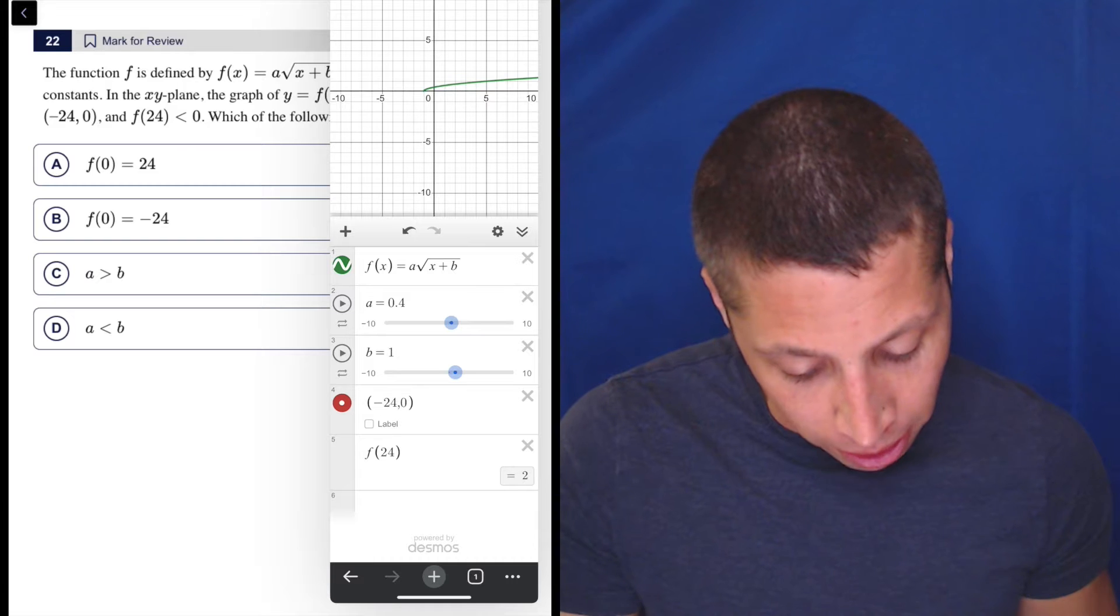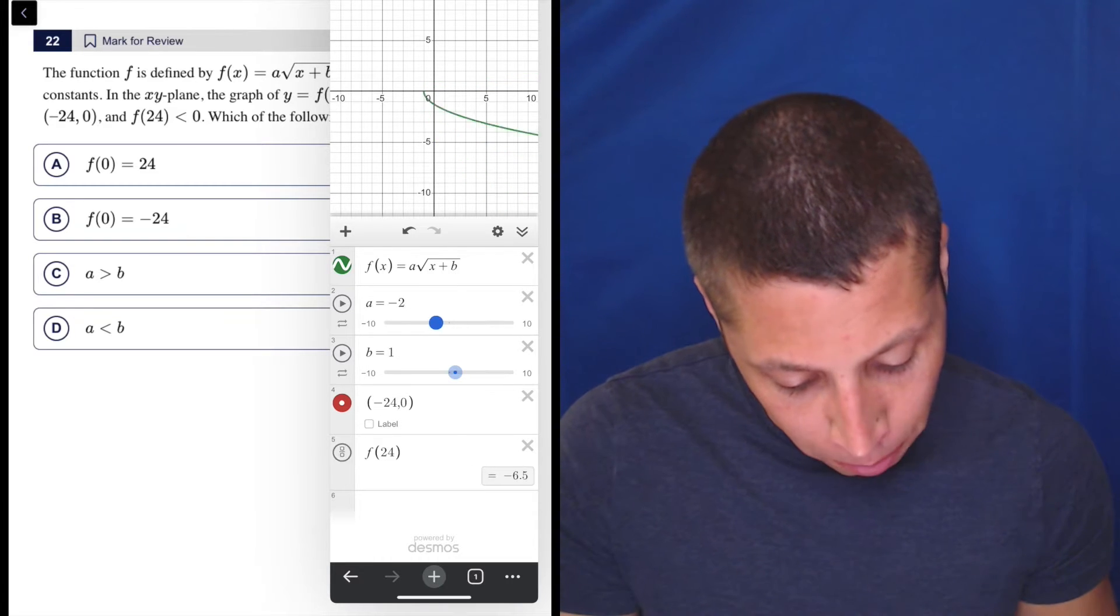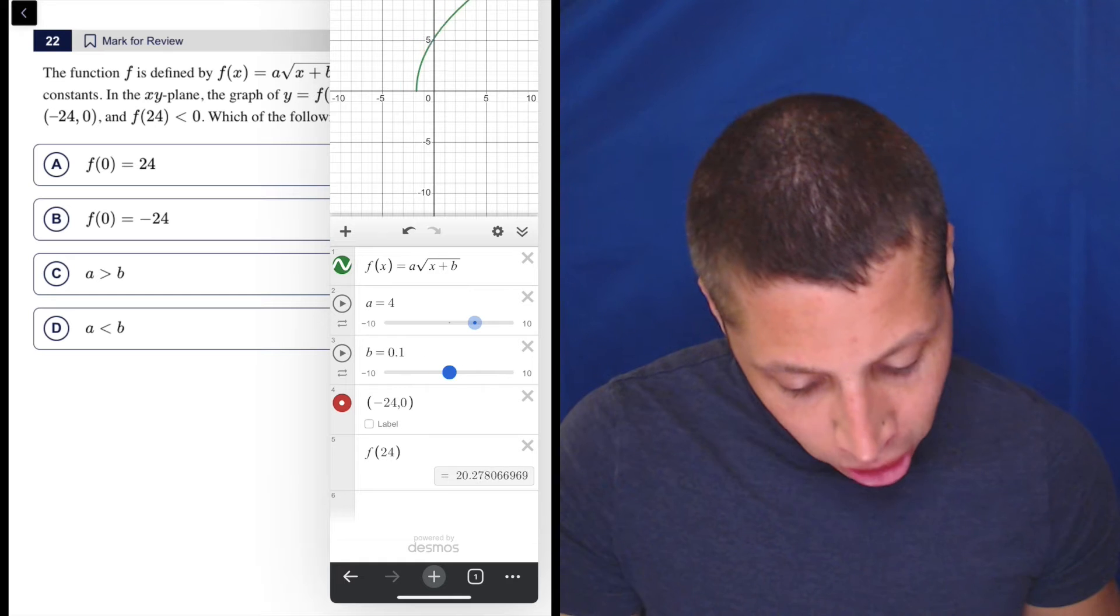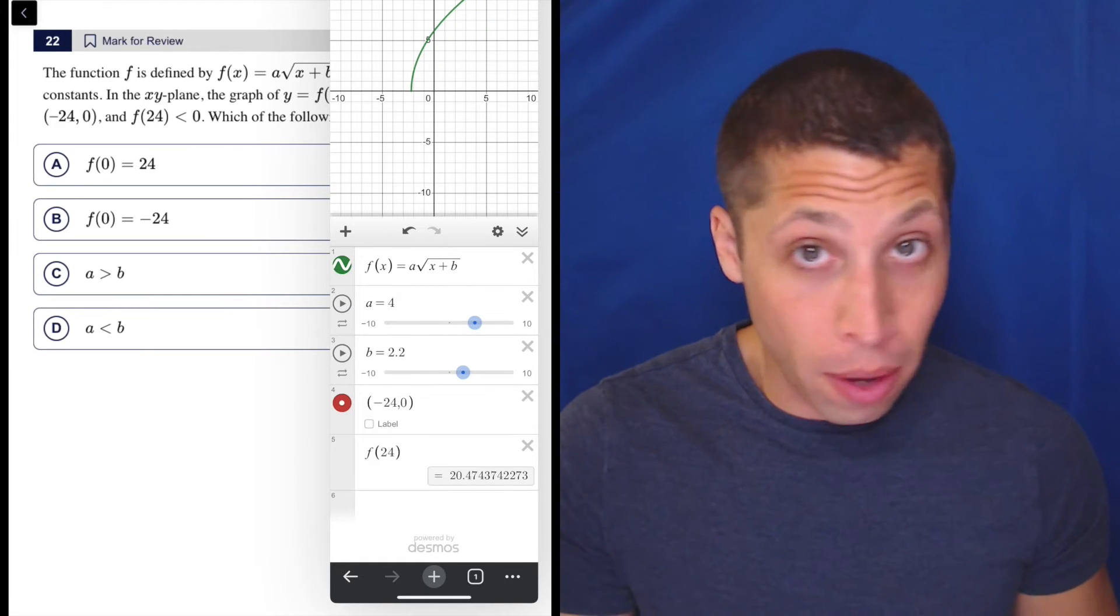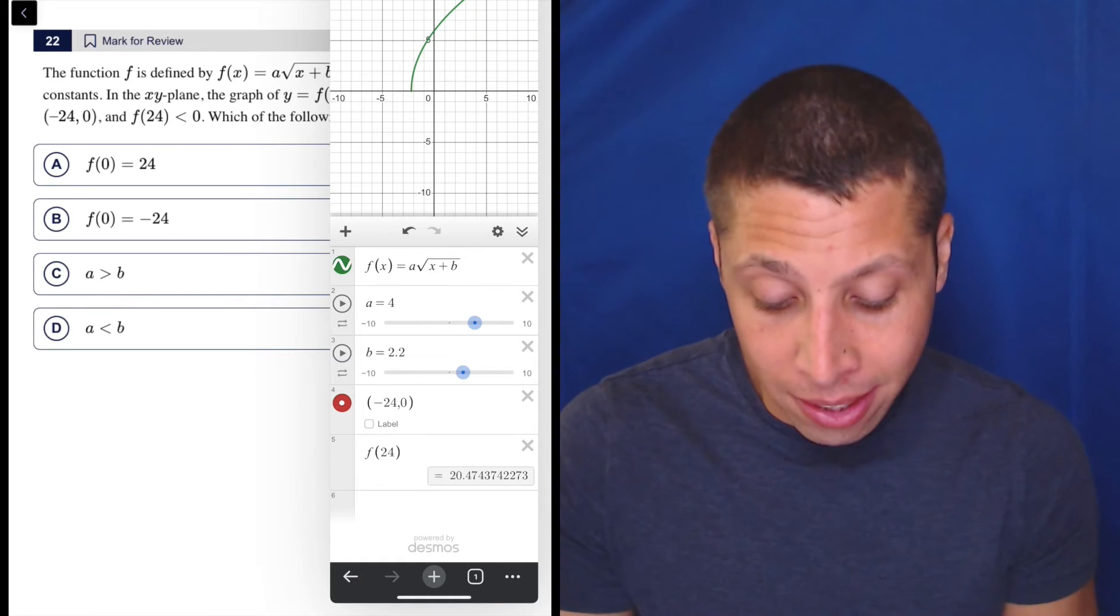It's also going to change, if you see here f(24), watch that number at the bottom. That's changing as I play with A. That's changing as I play with B. So we need to make sure that that is less than zero.